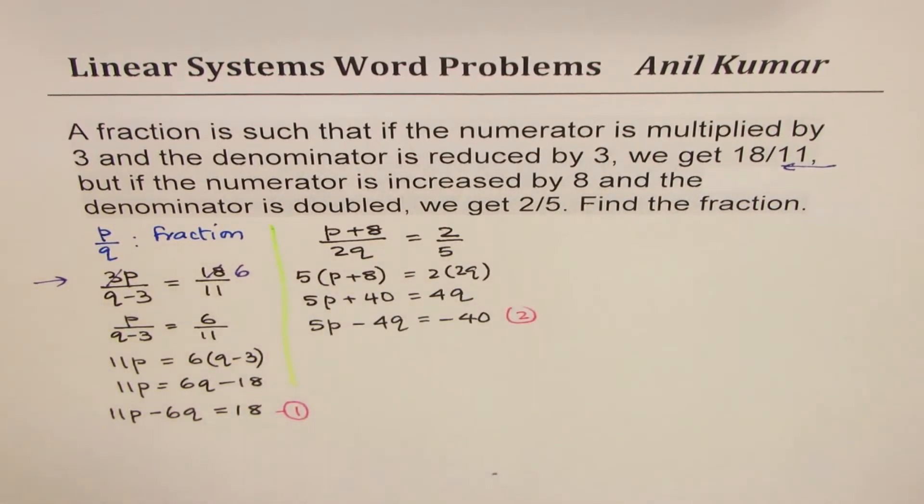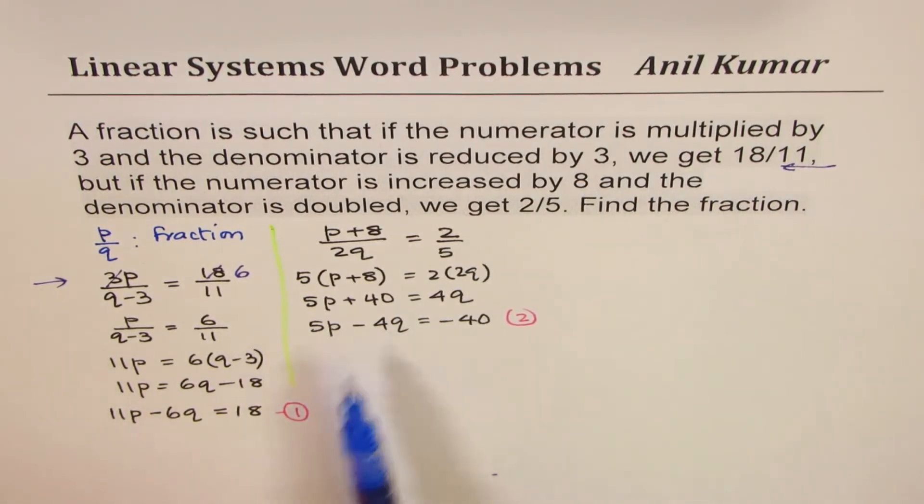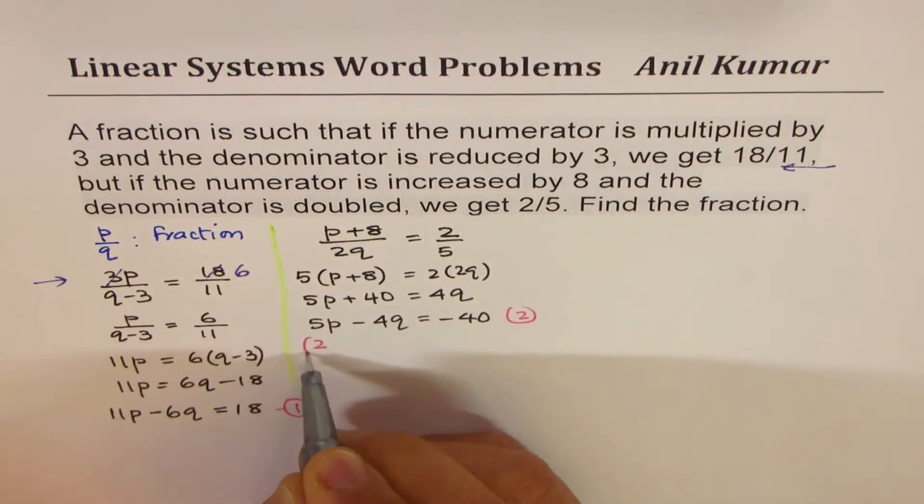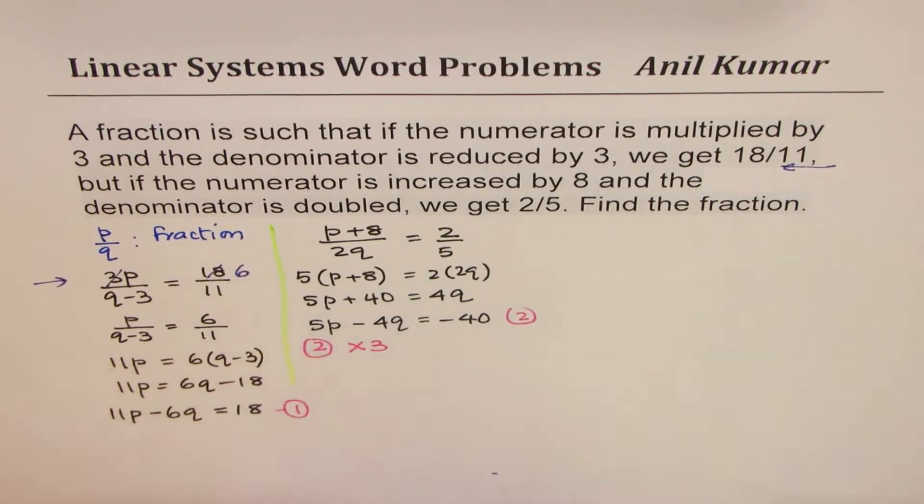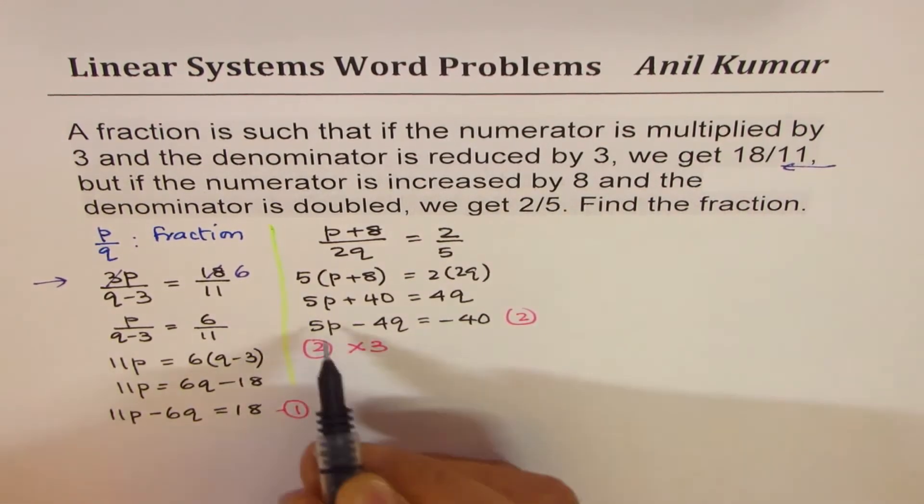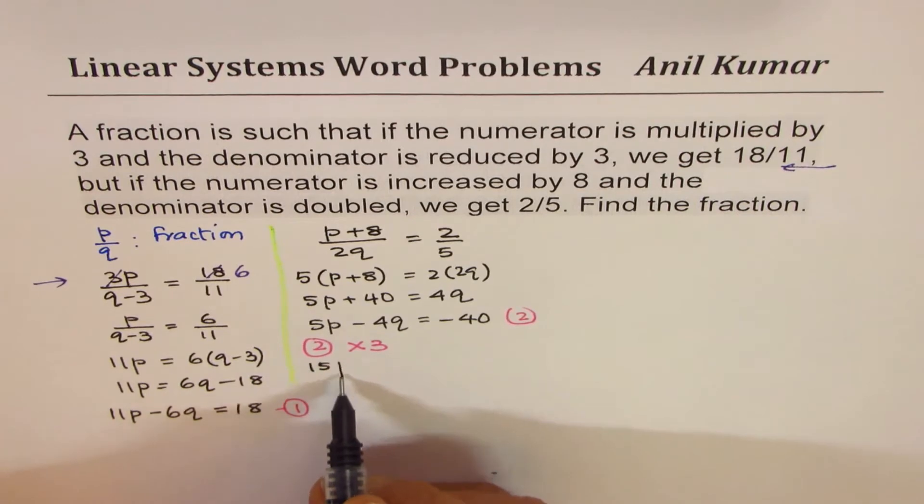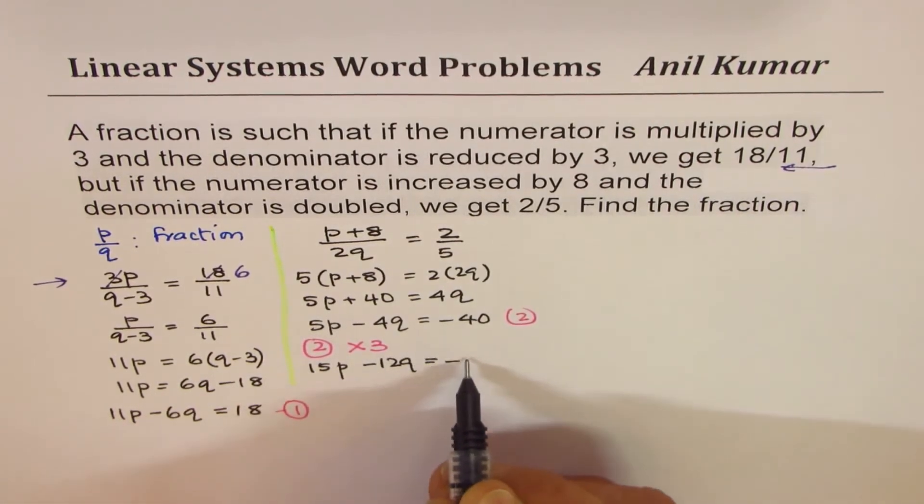Avoid fraction. That's the main thing. So all this we did to avoid fractions. Now we have two equations. We should be in a position to eliminate something. Now it is easier to eliminate q if I multiply this equation by 3. If I do equation 2 times 3, what do I get?